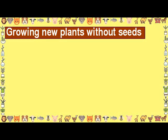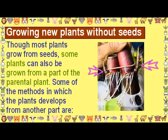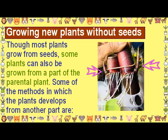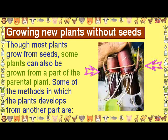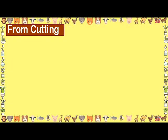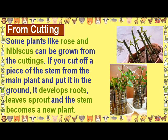Growing New Plants Without Seeds. Though most plants grow from seeds, some plants can also be grown from a part of the parental plant. From cutting: some plants like rose and hibiscus can be grown from cuttings. If you cut off a piece of the stem from the main plant and put it in the ground, it develops roots, leaves, a sprout, and the stem becomes a new plant.